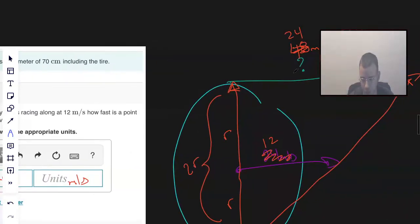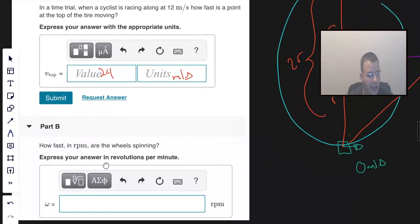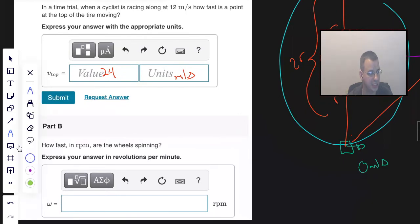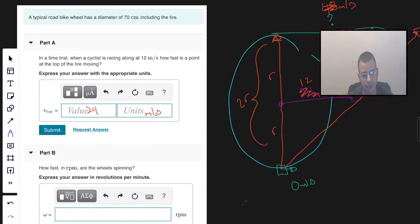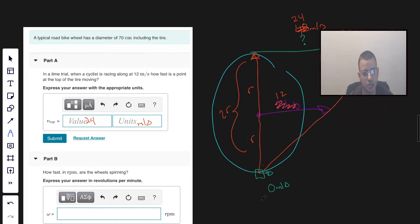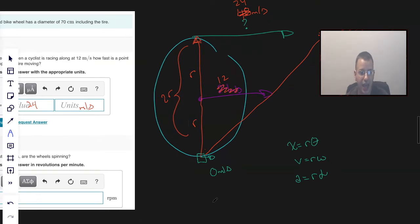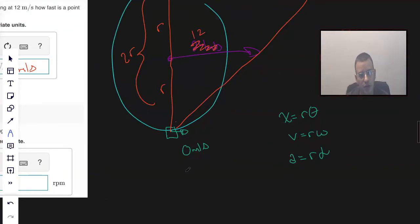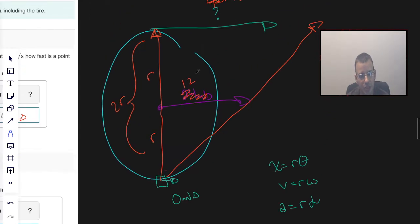So how fast in rotations per second is the wheel spinning? Let's see here. We're going to use the relationship x equals r theta, v equals r omega, and a equals r alpha. The average speed of the bicycle tire is going to be 12 meters per second, so that's what we're going to use.